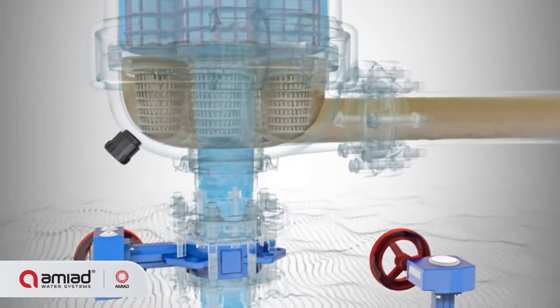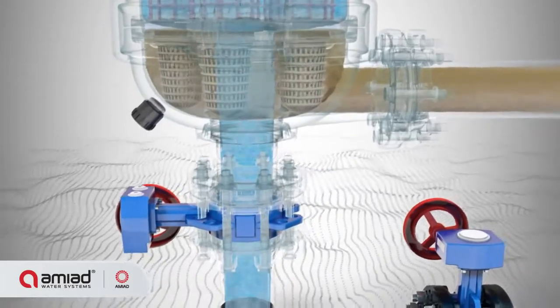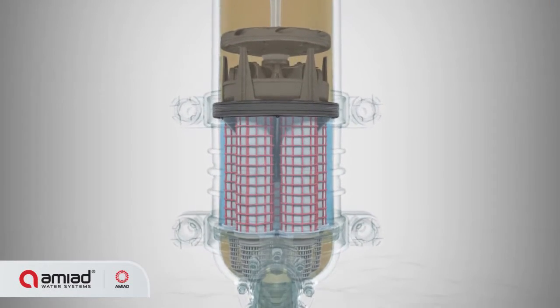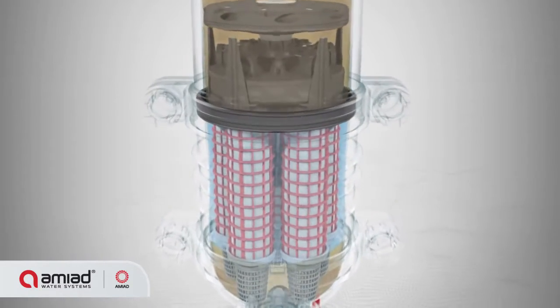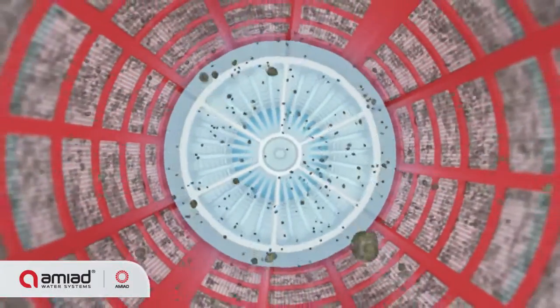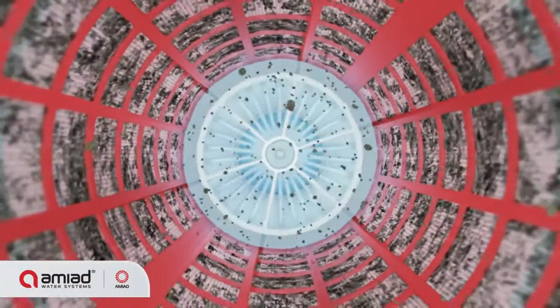The filtration process starts when raw water enters the filter through the inlet and flows to the core screens, where the water is pre-filtered to block and remove large dirt particles. The water then passes through the fine screens, trapping dirt particles on their inner surface. Dirt is accumulated within each screen, and clean water flows through the filter's outlet.